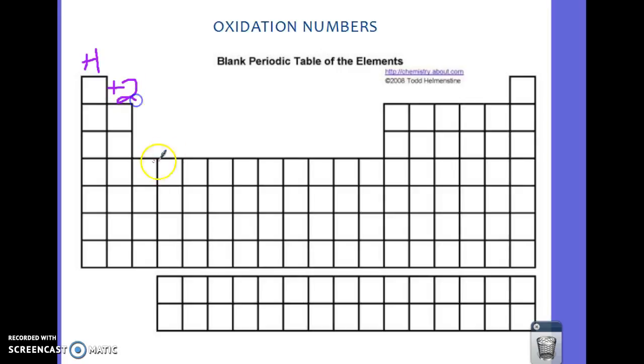Go on to plus two. Remember to skip all of these, because they're transition elements and they change on you. So their oxidation number is not as easily predictable.